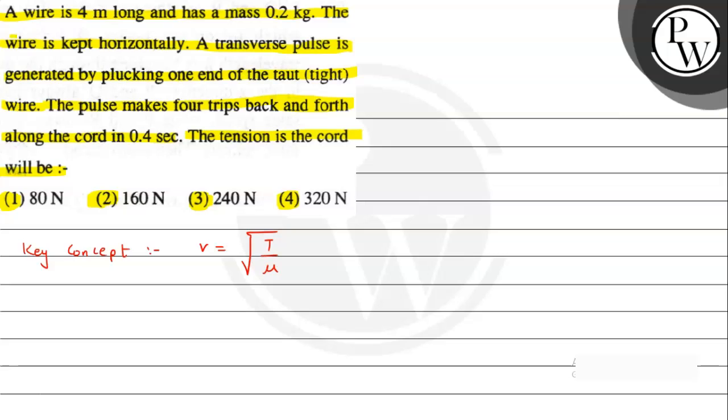In the question, the string is taut, meaning it must be fixed at both ends to remain in tight condition. This is 4 meter length. Now we have generated a pulse, and this pulse has made four trips to and fro. So the total distance the wave has covered is 4 × 4, which is 16 meters.